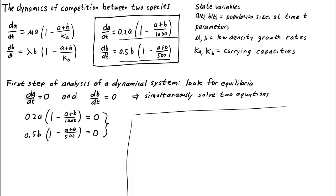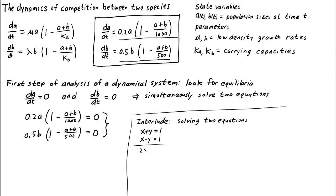Before we solve the system of equations, let's take a brief interlude to discuss methods of solving two equations. Let's imagine I had to solve the system x plus y equals 1 and x minus y equals 1. It's not too hard to analytically solve this system of two linear equations and determine that the solution is x equals 1 and y equals zero. For example, you could add the equations and get 2x equals 2, which implies x equals 1, and then plug in x equals 1 to the first equation to get y equals zero.